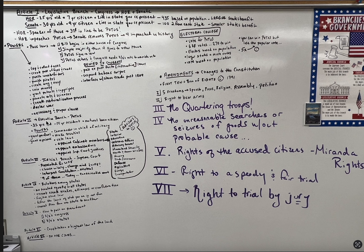We then have Article 2, which is the executive branch — President of the United States. In order to be the president, he must be 35 years old, a 14-year resident, and a natural-born citizen. Their powers? They can grant pardons, grant reprieves meaning shorten a prison sentence, serve as commander-in-chief of the military, make treaties, veto laws, appoint cabinet members, appoint ambassadors to other countries, and appoint Supreme Court justices who are there for life.